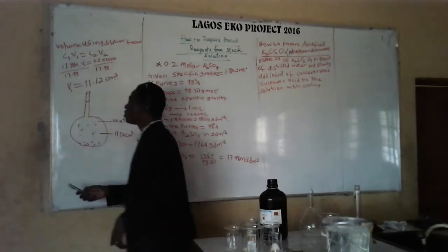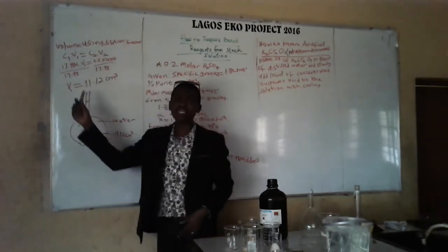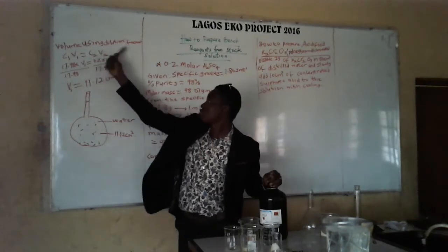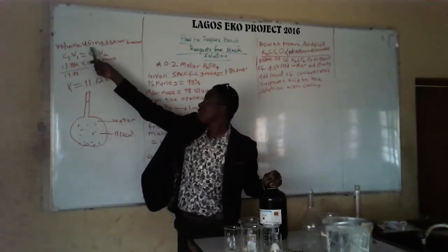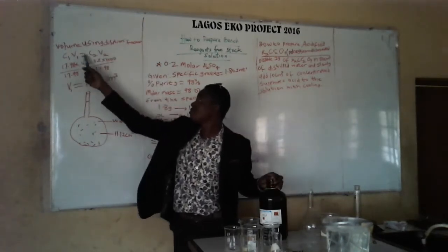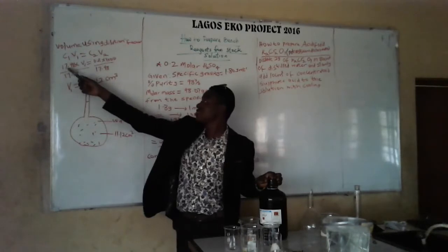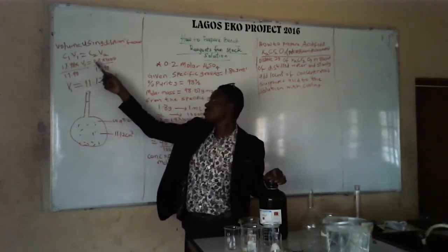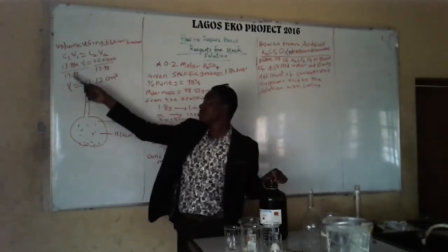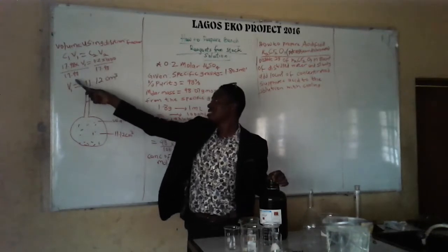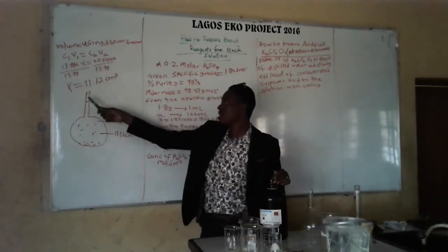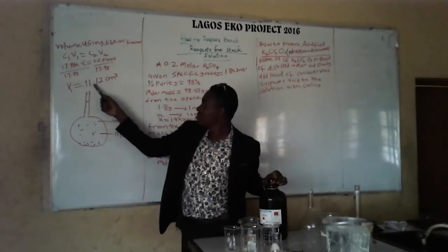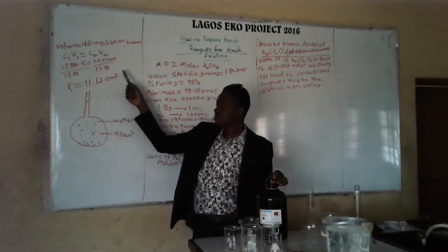After getting that, we work on determining the volume to measure from the stock solution. We apply the dilution formula: C₁V₁ = C₂V₂. So we have 17.98 × V₁ = 0.2 × 1000 mL. Dividing both sides by 17.98, we get V₁ = 11.12 cm³.